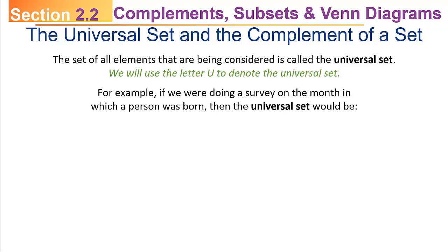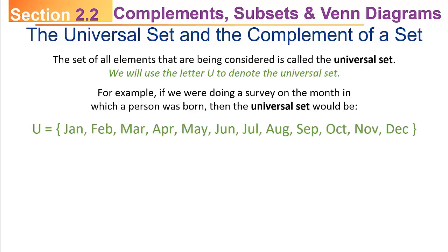For example, if we were doing a survey on the month in which a person was born, then the universal set would be the set containing all 12 months: January, February, March, April, May, June, July, August, September, October, November, December. There are no more months to consider. That would be our universal set from which a particular month would be chosen for a particular person.